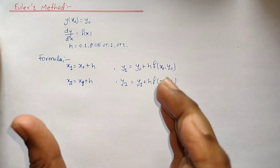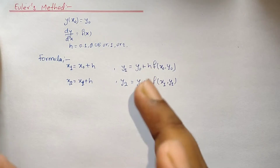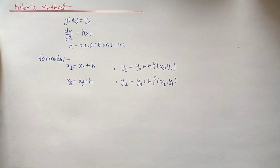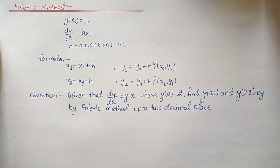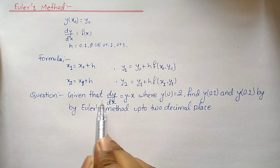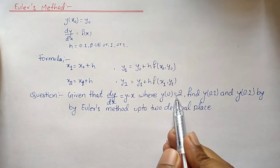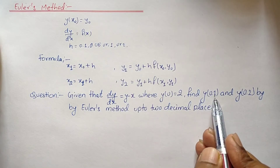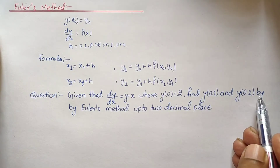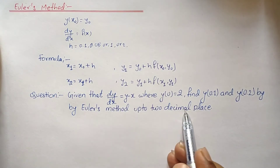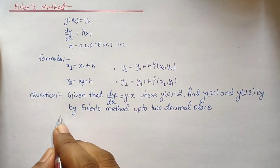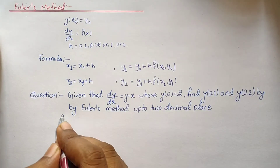These are the formulas and concepts we will be using in Euler's method. Now let's select a question and solve it. The question is: dy/dx equals y minus x, where y(0) equals 2. Find y(0.1) and y(0.2) by Euler's method up to 2 decimal places.